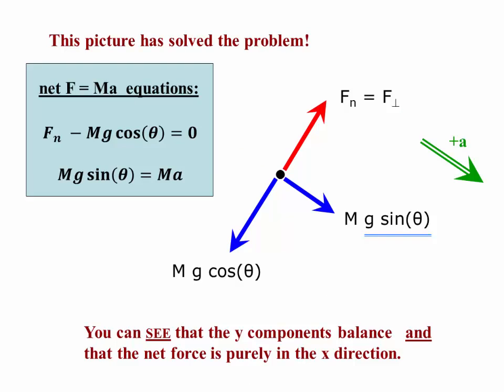Now we've solved the problem. You see, if we throw away the axes, you can see that there's two forces in the y direction, the normal force and mg cosine theta, that must be in balance. The net force in that y direction is zero. And there's an mg cosine theta that's unbalanced and is responsible for the acceleration along the x direction.